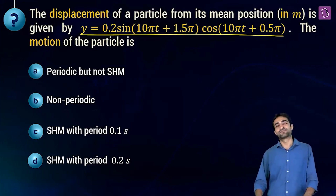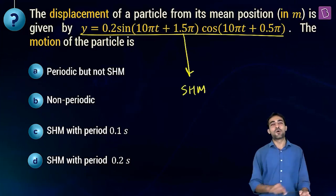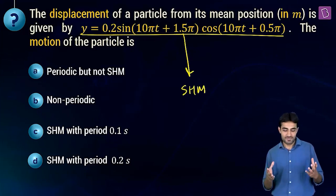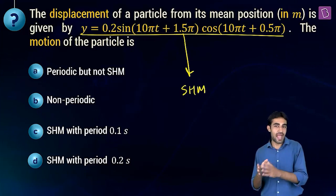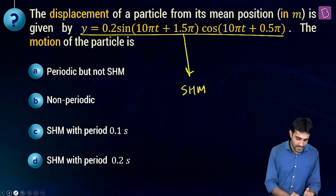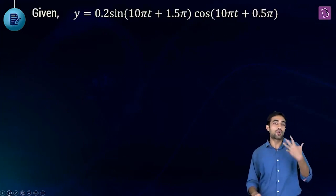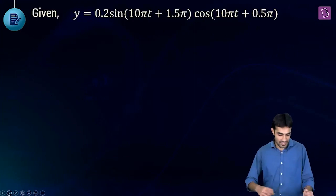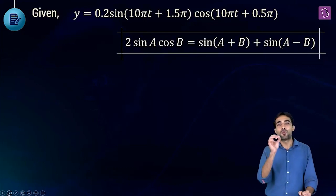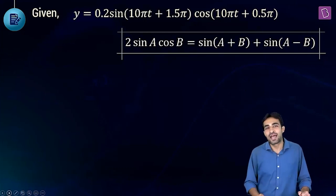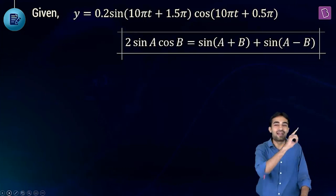How can we tell whether the motion is SHM or not? The straightforward way is to break this equation into different terms. This equation contains a term of sine and cosine multiplied with each other. So we use our famous identity: 2·sinA·cosB = sin(A+B) + sin(A−B).